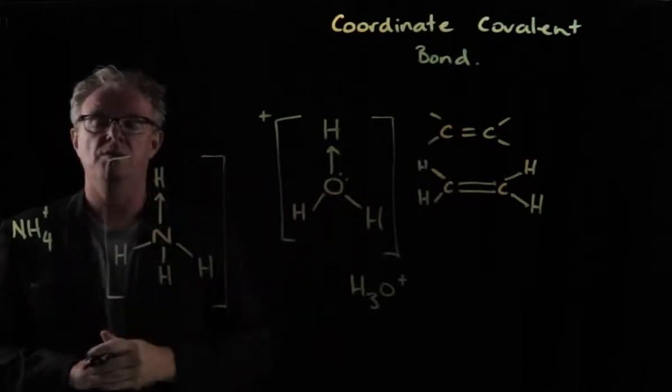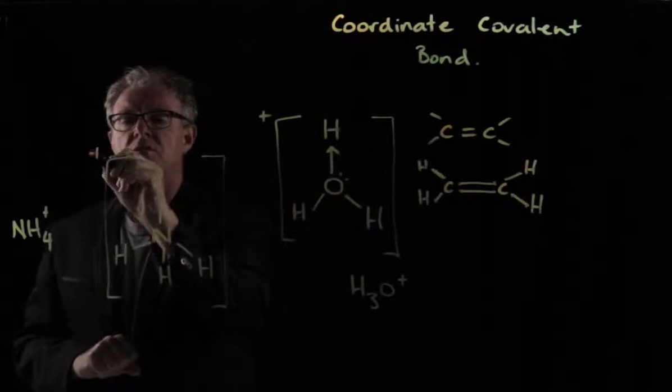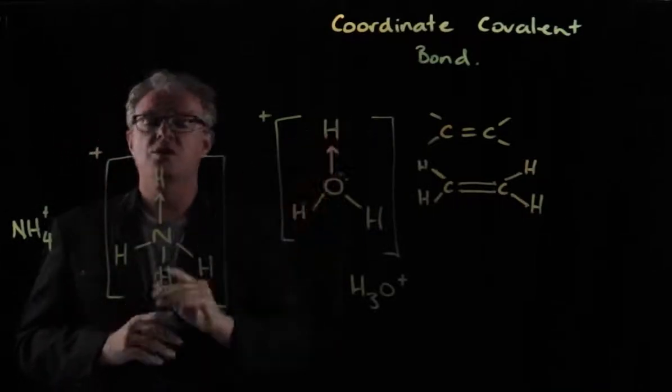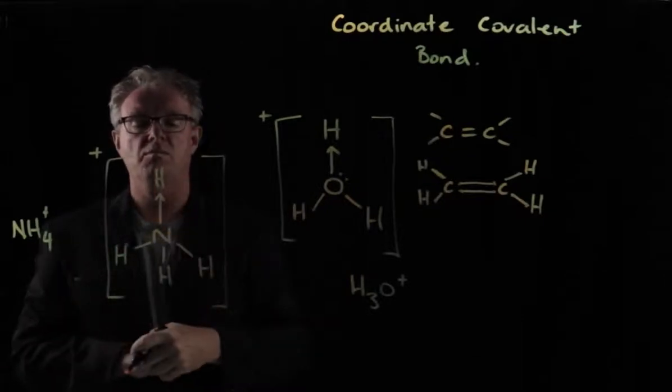And so overall now, of course, the same sort of case as we had with the hydronium ion, we have a charge of plus one. So this is another example of a coordinate covalent bond, a molecule that has a coordinate covalent bond.